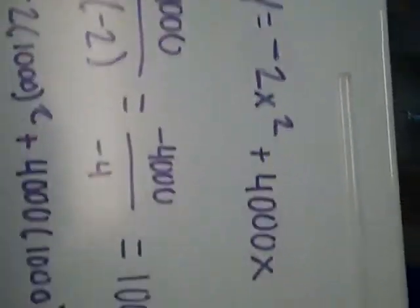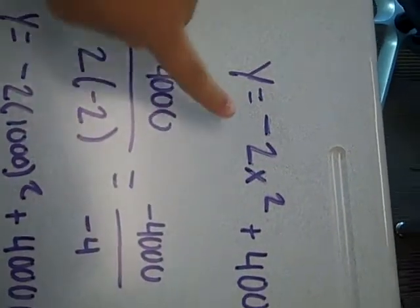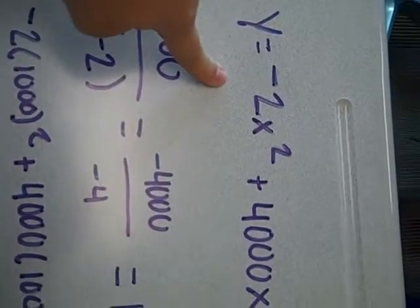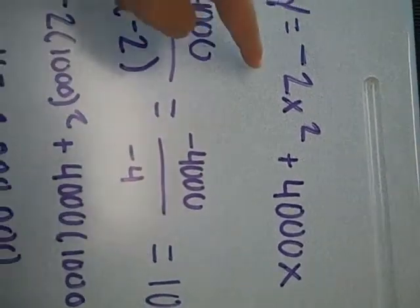So here's the work. This is our equation to start off with, which is Y equals negative 2X squared plus 4000X.